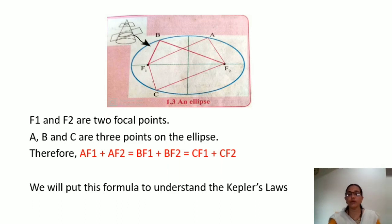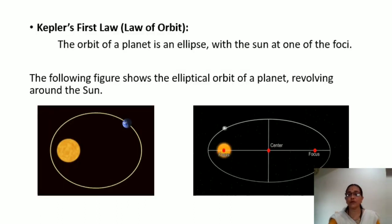Therefore, AF1 plus AF2 is equal to BF1 plus BF2 is equal to CF1 plus CF2. Now, we will put this formula to understand Kepler's law. Kepler's first law. The orbit of the planet is an ellipse with the sun at one focal point.